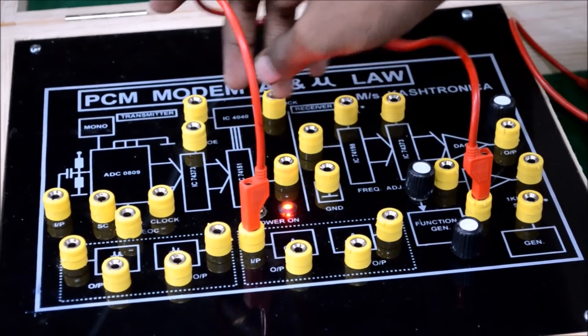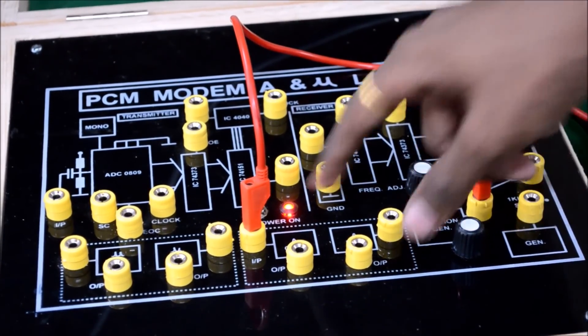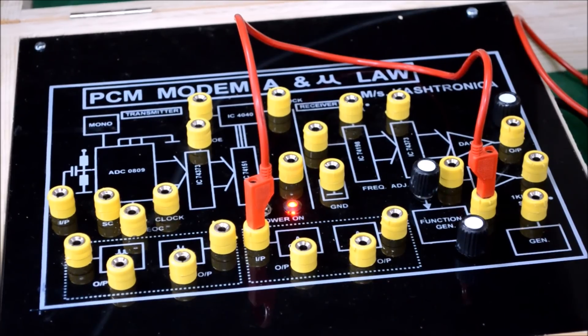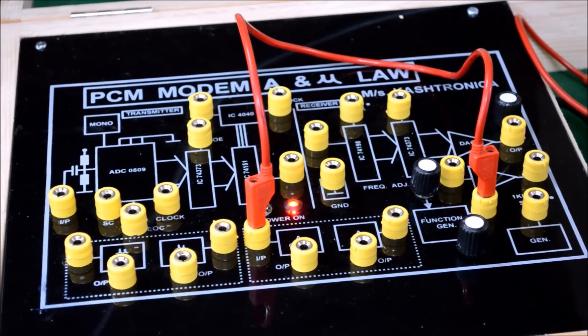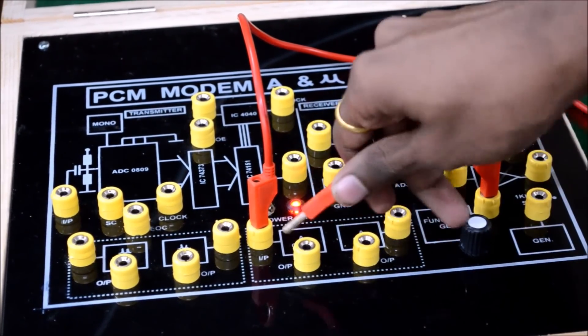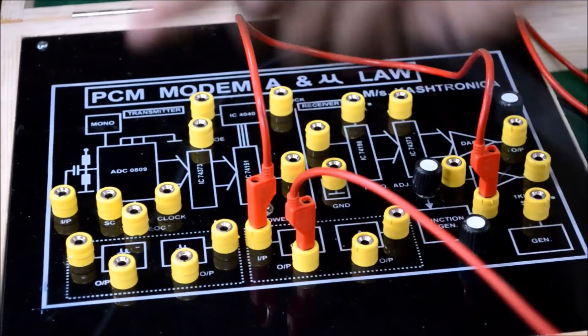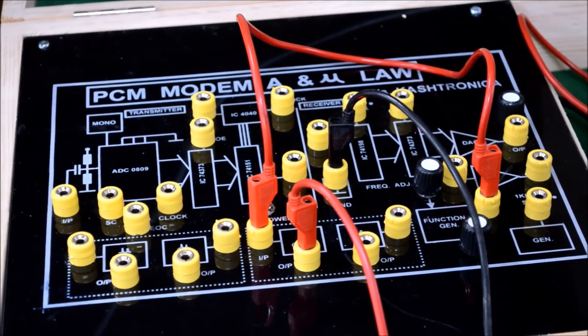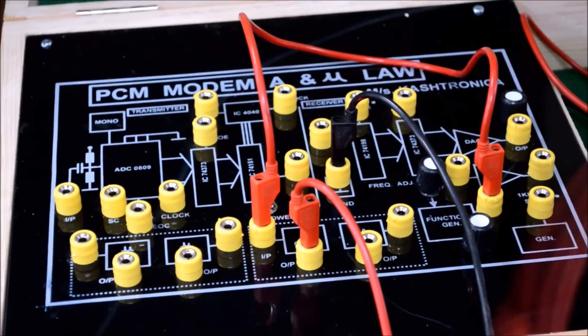Now, we need to observe both the waveform of function generator and ALO compressor simultaneously. For this reason, I will be requiring two probes of DSO. One, I will be connecting to the ALO compressor output and ground and the other to our function generator.